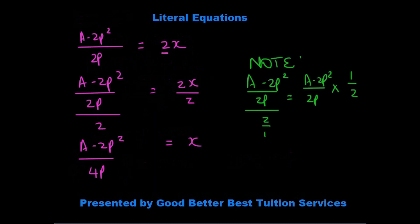So that gives us a minus 2p squared over 2p is equal to 2x. Now what we need to do is to get rid of the 2 by dividing by 2 on both sides, on the left hand side and the right hand side.